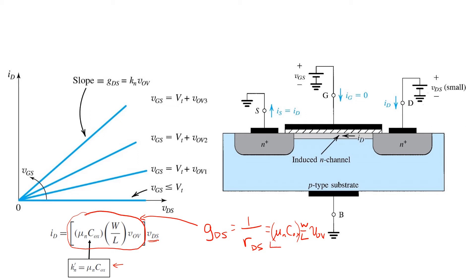Moreover, these terms appear together so often, mu n C-ox W over L, that we'll make a further definition of K n for all those constants put together. And of course, K n is equal to K n prime times the transistor W over L.